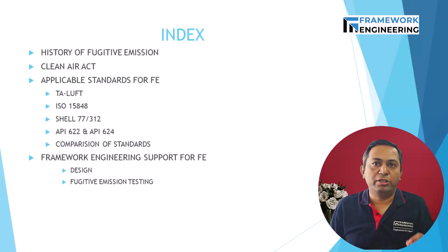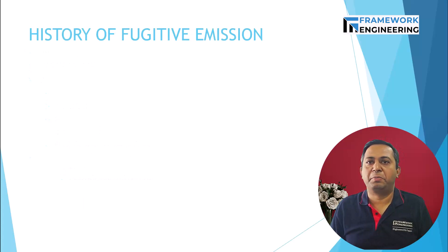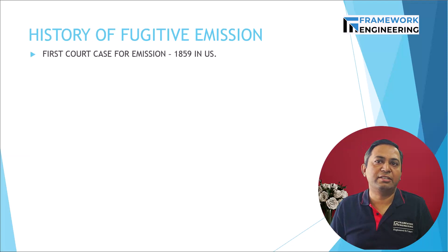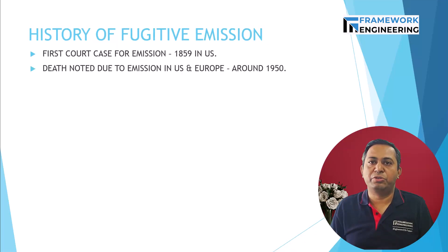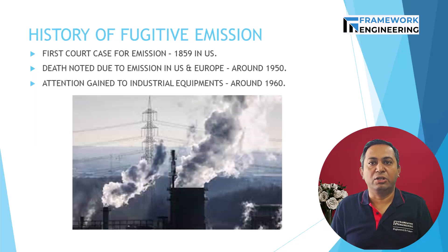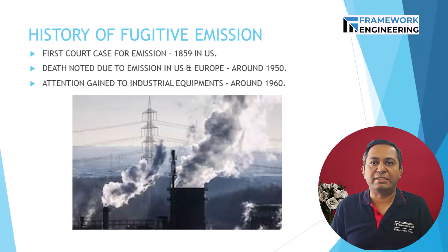The history of fugitive emission can be traced back to the earlier 1900s, with the first successful court case in the United States against a blacksmith for odors and smoke in 1859. The concept of fugitive emissions, which refers to unintended leaks of gas or vapor from pressurized industrial equipment, gained more attention in the 1960s and 70s with the establishment of the U.S. Environmental Protection Agency — that is the EPA — and the Clean Air Act.